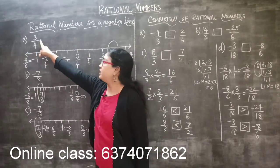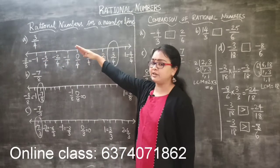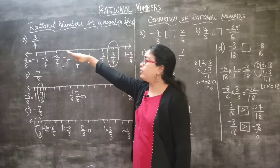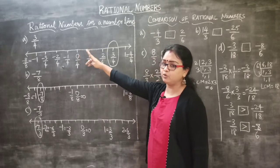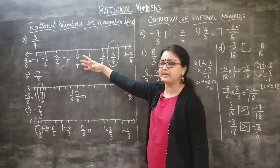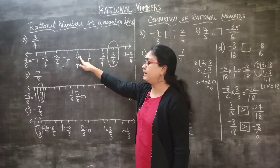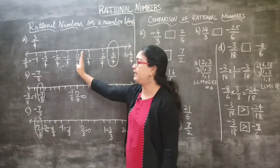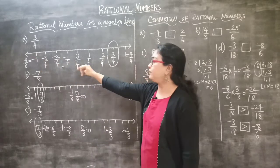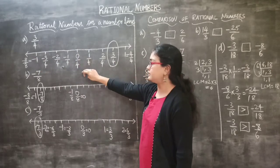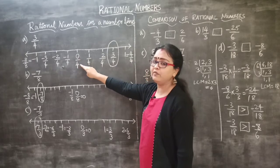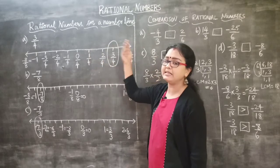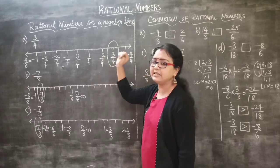Let's see the first question: 3 by 4. So here 3 is the numerator and 4 is the denominator. The first thing to do as soon as you see 4 as a denominator — or any number as a denominator — is that in the center we specify 0, then 1, 2, 3 on the right side and minus 1, minus 2, minus 3 on the left side. So as soon as I see the denominator is 4, I have to specify 0 with the denominator 4, so that our divisions will be easy to do and we can represent 3 by 4 very easily.